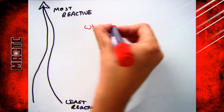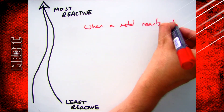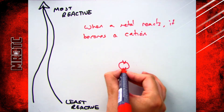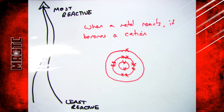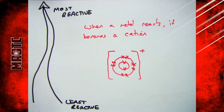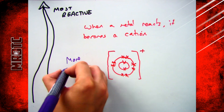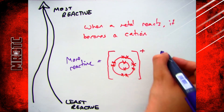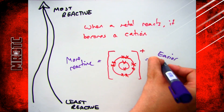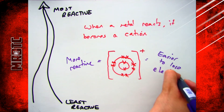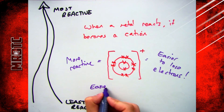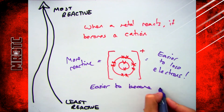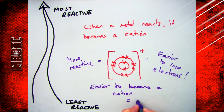So what you need to know is why some metals are more reactive than others. You should remember that when a metal reacts it becomes a cation, so it will lose electrons to get a full outer shell. The more reactive a metal is, the easier it is to become a cation and the easier it is to lose electrons. So if you have a metal at the top like calcium, it is more reactive because it loses its electrons more easily — it becomes a cation easier. Therefore your less reactive ones like copper don't lose electrons easily, and therefore it is less reactive.